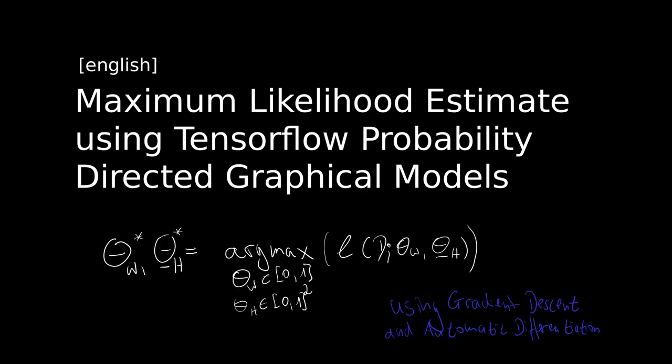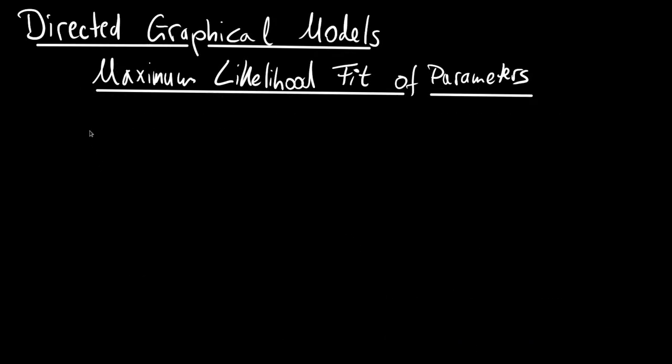Welcome to a new video. Today we want to talk about the maximum likelihood fit of parameters in directed graphical models, where we will look at a special case of a DGM with only observable variables, derive the likelihood function, and implement this in TensorFlow Probability to see how to easily solve such problems using automatic differentiation. Let us start.